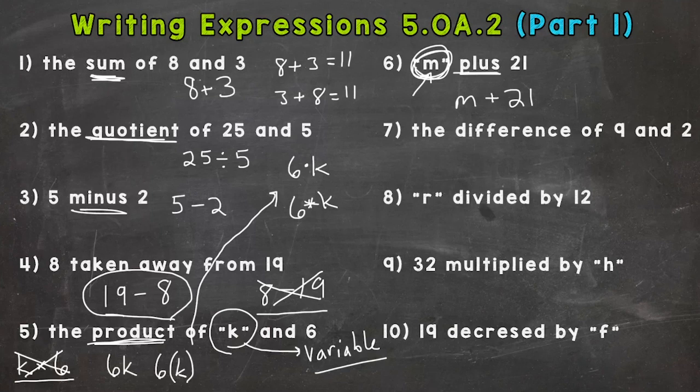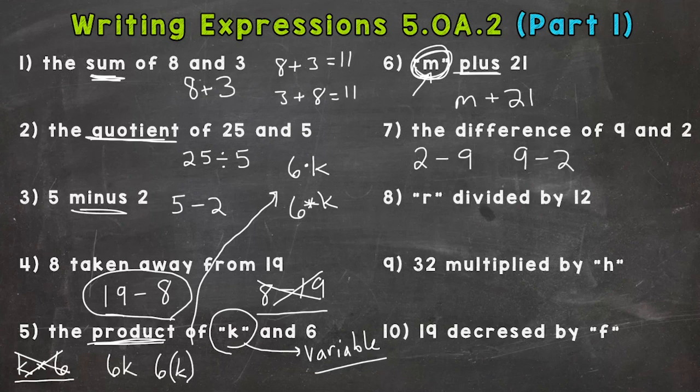Number seven: the difference of nine and two. So you have two options here: 2 - 9 or 9 - 2. This one's just straightforward, so you keep the order: 9 - 2.